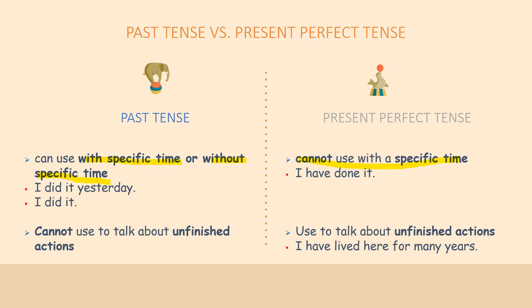Also, you cannot use Past Tense to talk about an unfinished action. However, you can use Present Perfect to talk about an unfinished action. As the example indicates here: 'I have lived here for many years.' This means you started living here years ago and up until now you are still living at that place. So that is the difference between Past Tense and Present Perfect Tense.